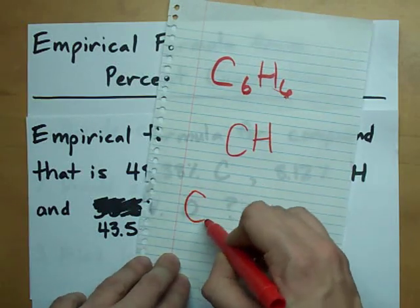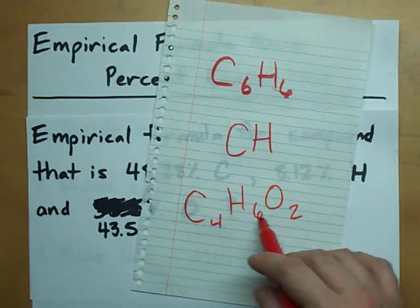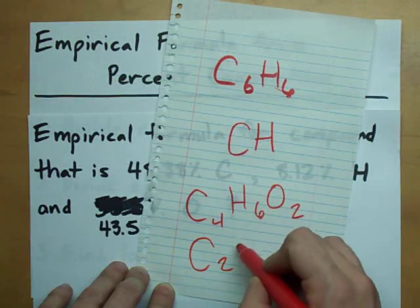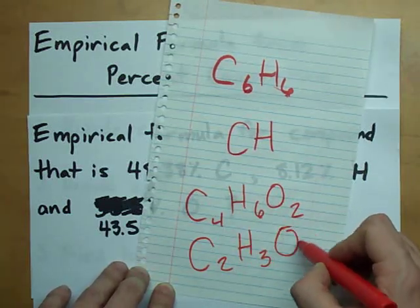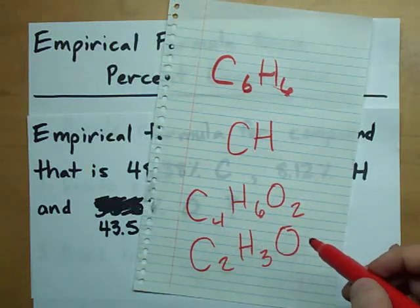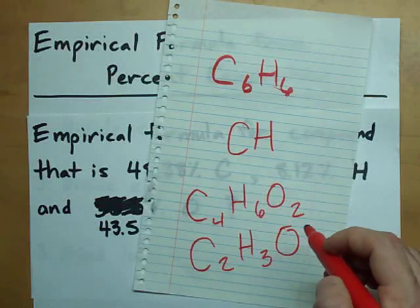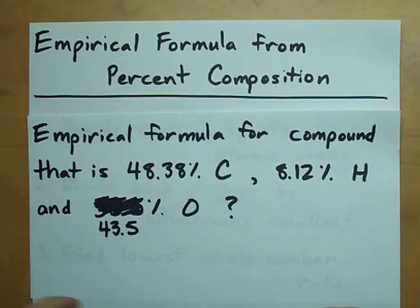Another example might be C4H6O2. They're all divisible by 2, so the empirical formula for that would be C2H3O. Notice how we all divided them by 2? It's still the same ratio of atoms, but we have the lowest possible whole numbers. That's what we're finding here. And boy, do I have a way for you to do that.